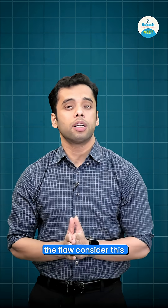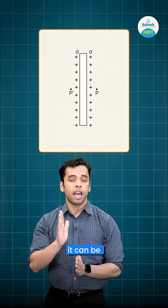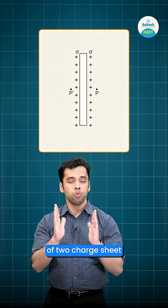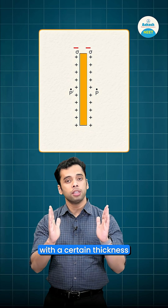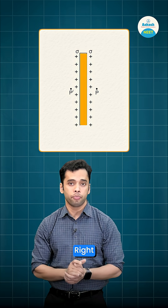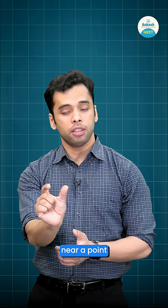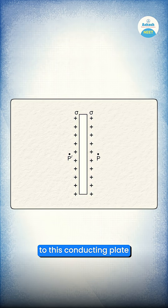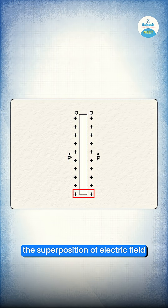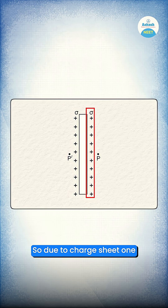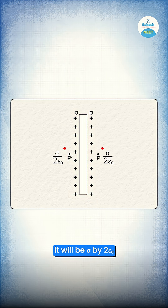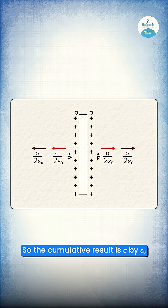To understand the flaw: this conducting plate can be treated as a combination of two charge sheets with a certain thickness. To write the electric field near a point which lies close to this conducting plate, we take it to be the superposition of electric fields due to the two charge sheets. Due to charge sheet one it will be σ/2ε₀, and due to the other charge sheet again it will be σ/2ε₀. So the cumulative result is σ/ε₀.